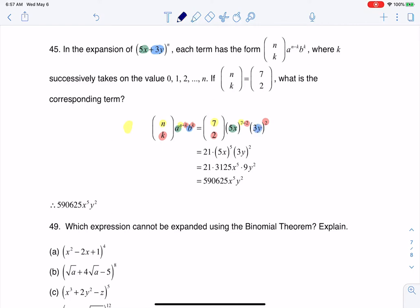I crunch 7 choose 2 on my calculator, it's 21. Then I've got 5x to the fifth, 3y squared. Once I start expanding all of that and collecting like terms, or I should say multiplying the coefficients, and then I've got my powers on x and y.